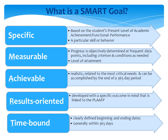Achievable means the goal should represent what is realistic, related to the most critical needs, and can be accomplished by the end of a 365-day period. Most schools are not open 365 days a year, so schools may want to see how many actual weeks of instruction occur before making determinations about what is achievable. Many IEP teams have been found to set levels of achievement that are unrealistic, so make sure the attainment levels are based on data.